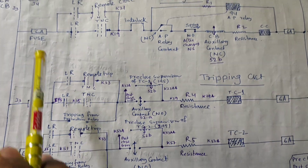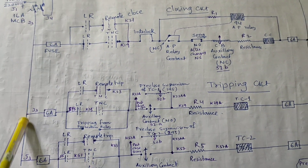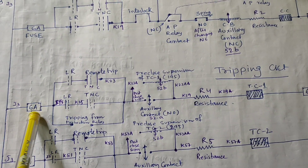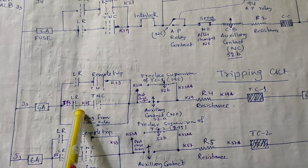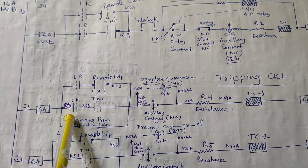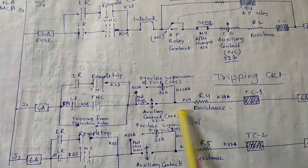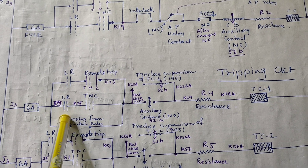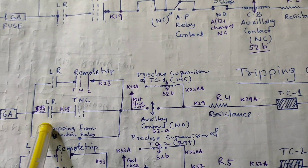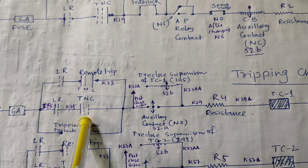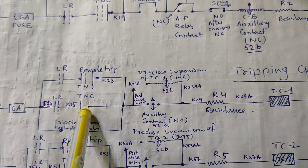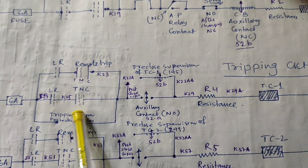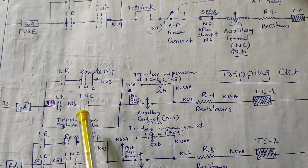The positive pulse of the DC is coming via this 6-ampere fuse and the LR switch. For local operations, this LR switch — the local remote selector switch — is selected in the local position. This is the TNC switch inside the breaker cubicle. Suppose the breaker is in on condition.